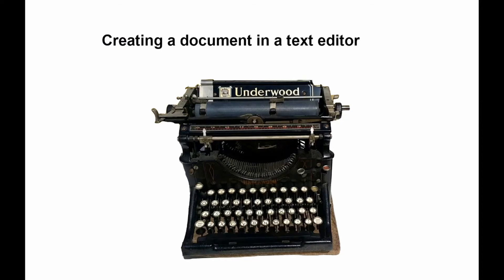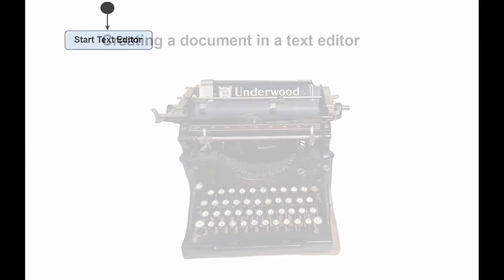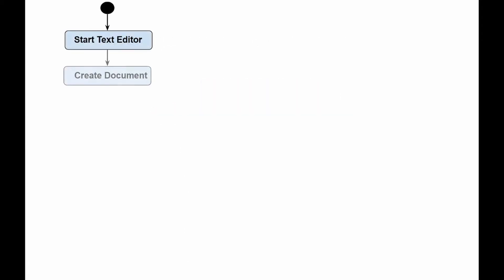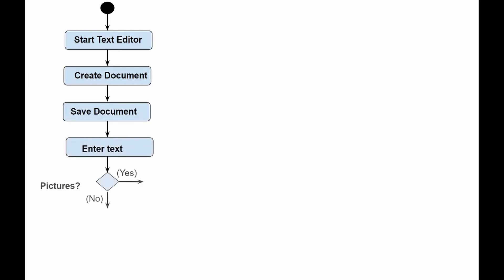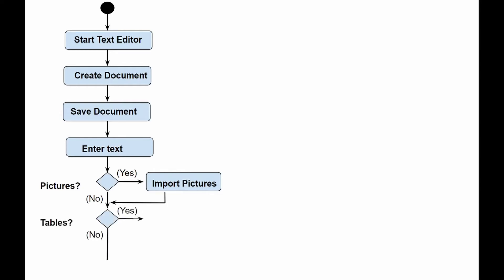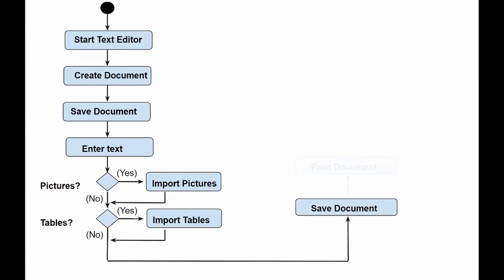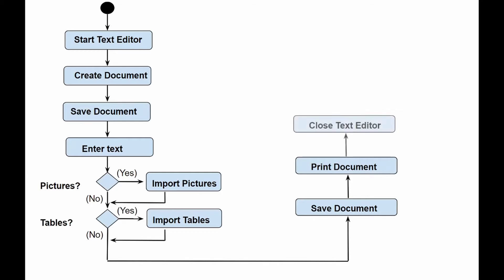The following steps of the activity diagram describe the workflow for creating a document in a text editor: open the text editor, create a document, save the document, enter the text. If graphics are necessary, import them into the document. If a table or spreadsheet is necessary, create the required table or spreadsheet and import it into the document. Save the document, print the document, exit the text editor. Seems pretty logical and simple.